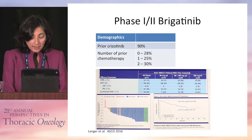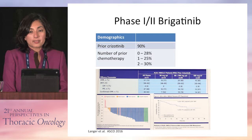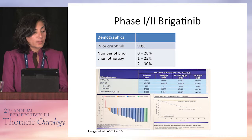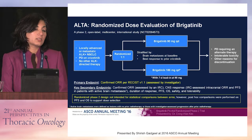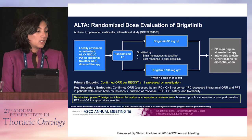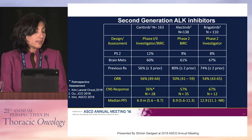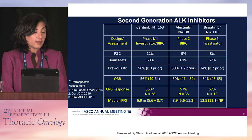Brigatinib is another second-generation ALK inhibitor in development. Its development was impacted by awareness of patients who had sudden pulmonary toxicities, distinct from the pneumonitis known as a class effect. This required further evaluation at lower doses. The trial randomized patients to either 90 milligrams or 180 milligrams of brigatinib. Responses were seen at both dose levels — 45% at the lower dose and 54% at the 180 milligram dose. CNS responses were also noticed, a little higher at the higher dose.